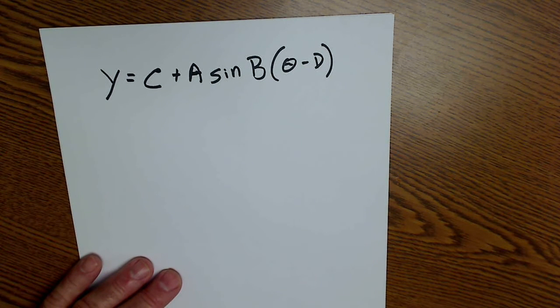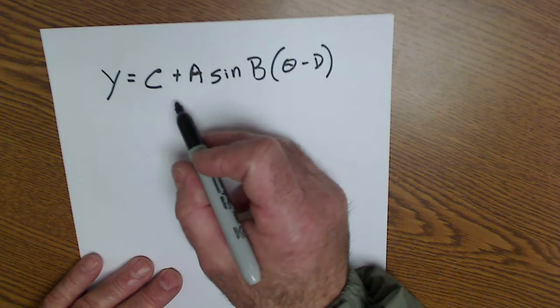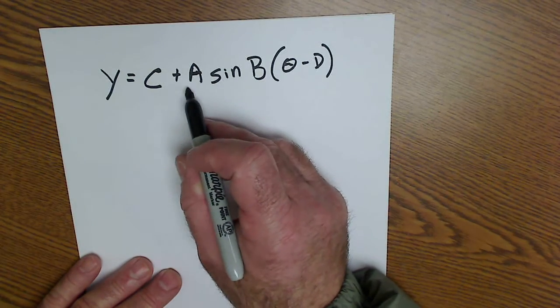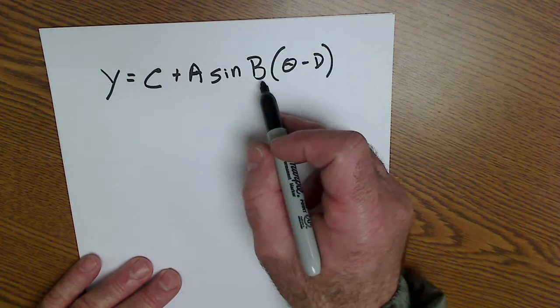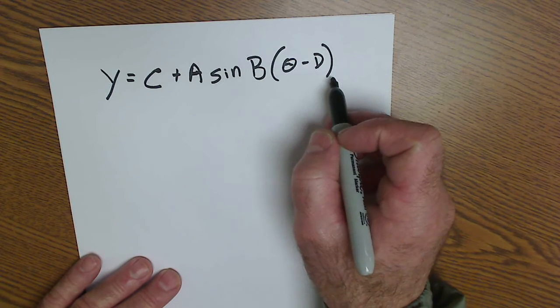Here's graphing trig functions. Here's a general equation: y equals c plus a sine or cosine b theta minus d.